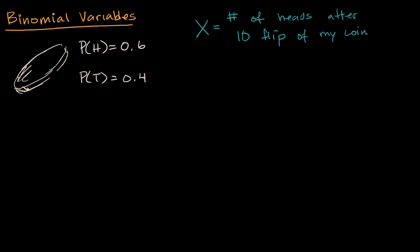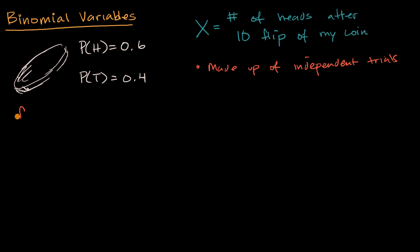One of the first conditions for a binomial variable is that it's made up of a finite number of independent trials. A trial is each flip of my coin — a flip equals a trial. What do I mean by each trial being independent? The probability of whether I get heads or tails on each flip is independent of whether I got heads or tails on some previous flip. So in this case, we are made up of independent trials.